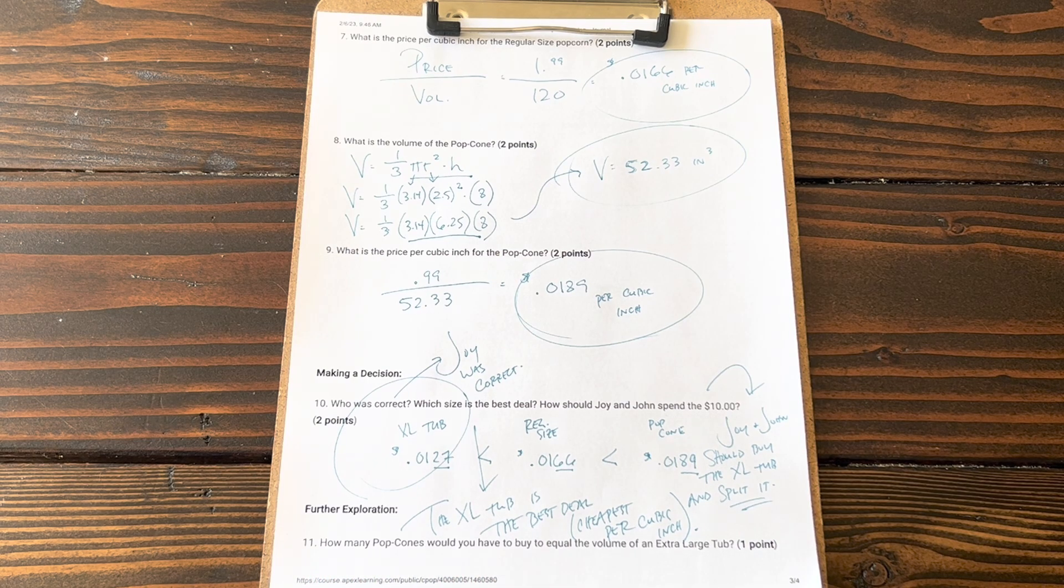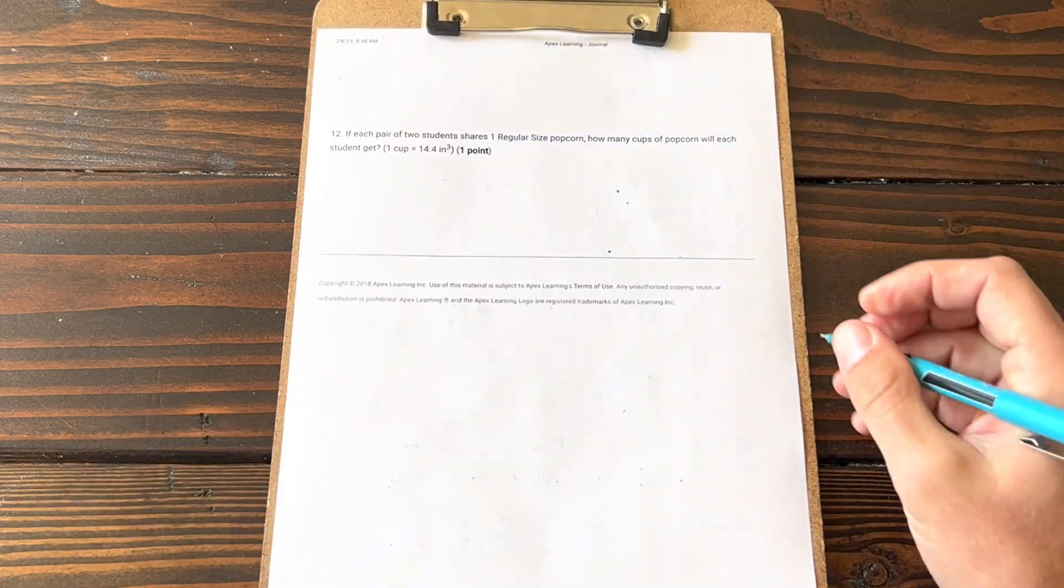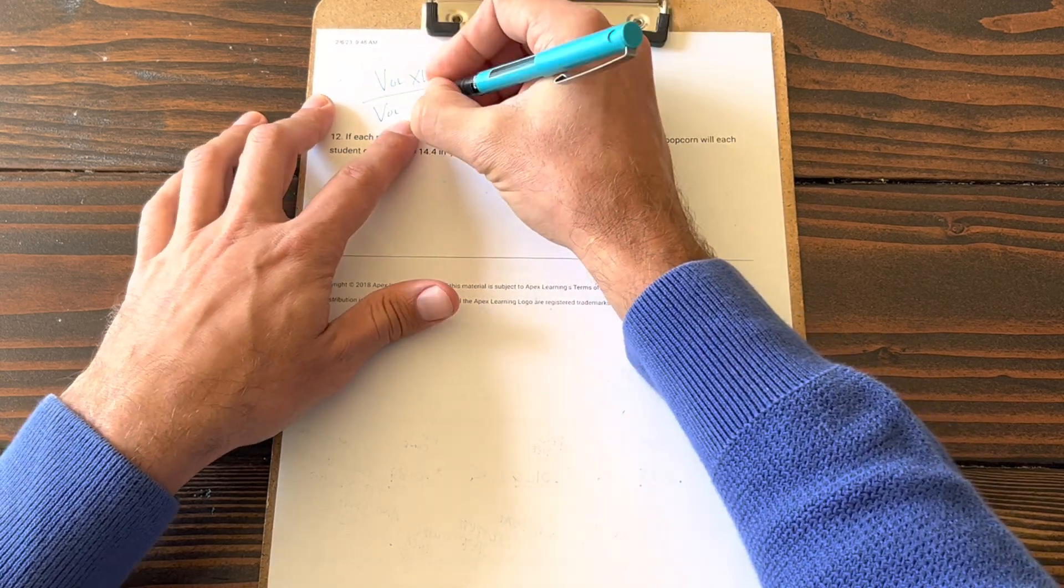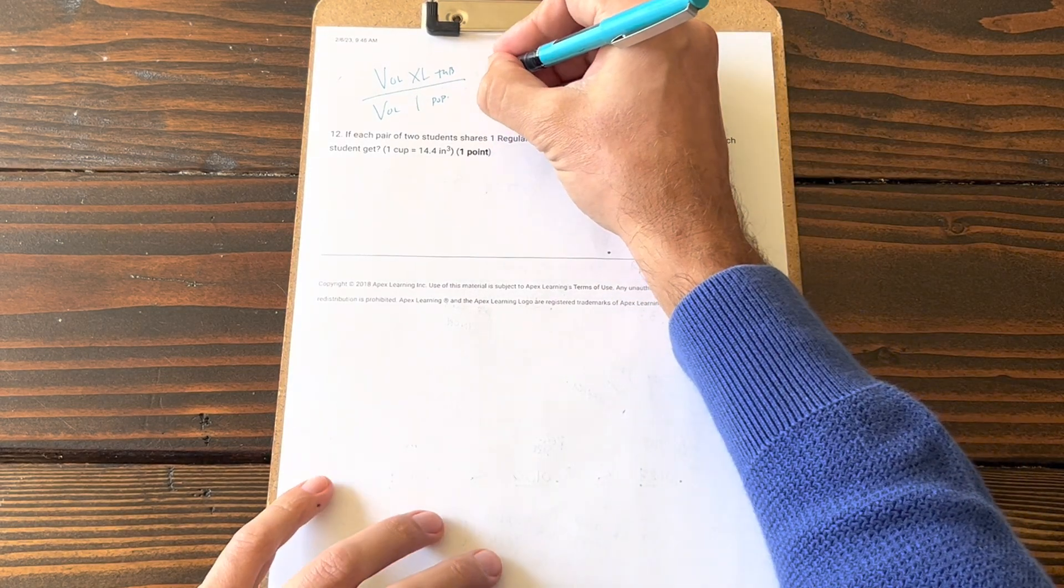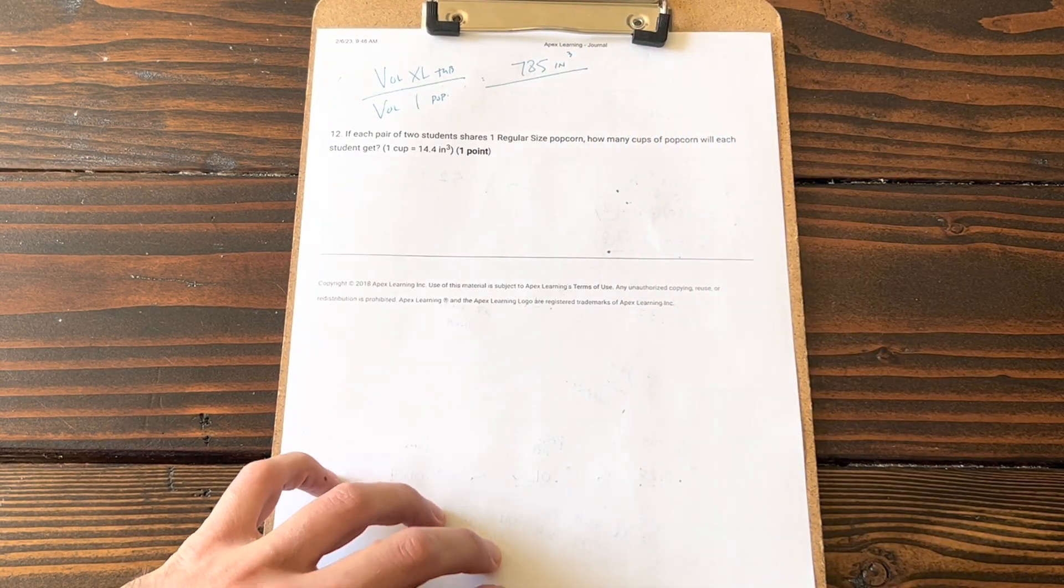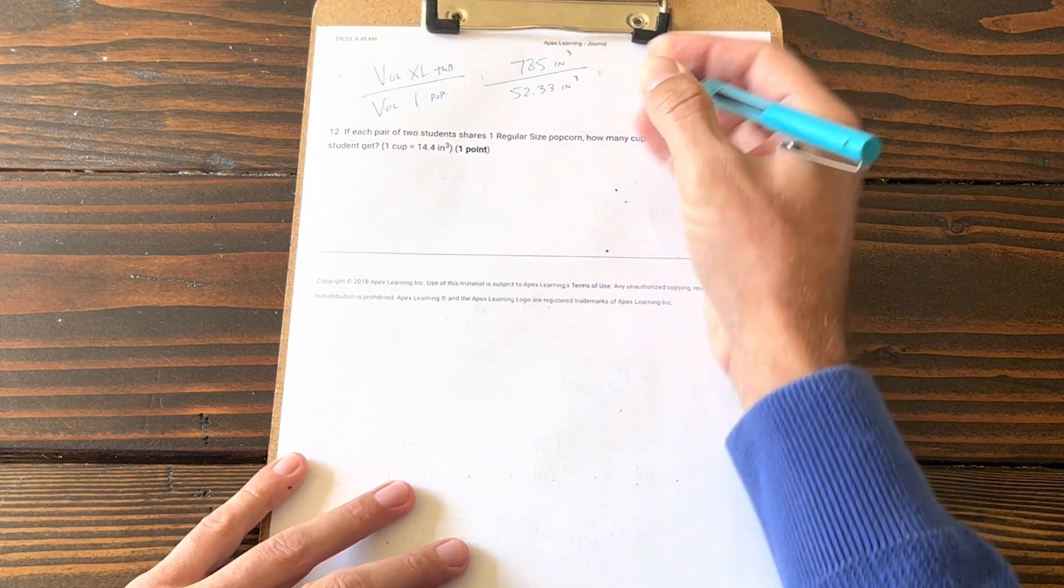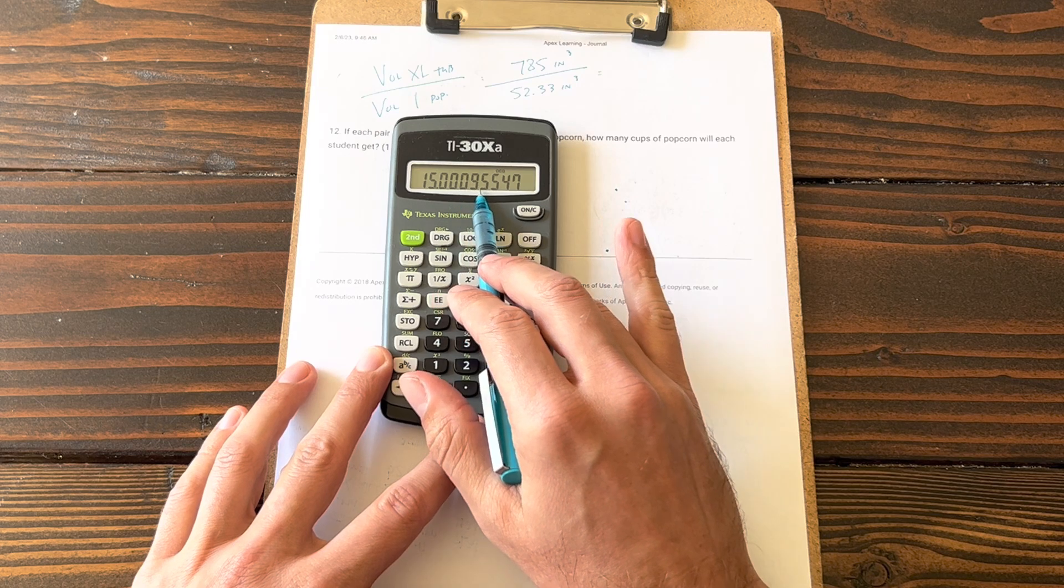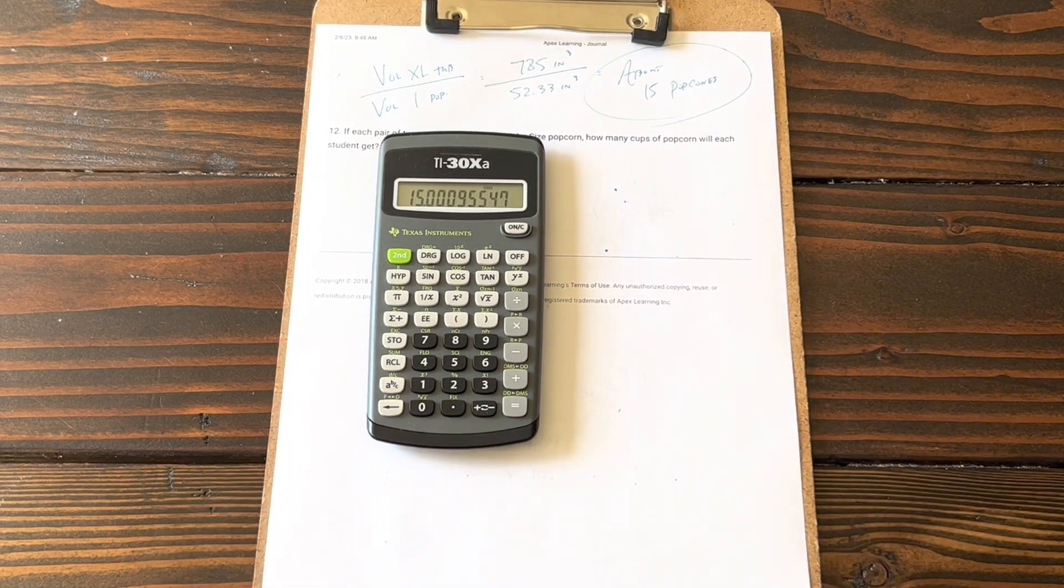Question 11: How many popcorns would you have to buy to equal the volume of an XL tub? We just need to take the volume of the greater volume—so the volume of the extra large tub—and we'll divide that by the volume of one popcorn. This will tell us how many popcorns it would take to fill or to reach the volume of an XL tub. The volume of the extra large tub was 785 inches cubed. Volume of a popcorn was 52.33. So how many would it take? 785 divide 52.33 equals 15.00095. So about 15 popcorns would equal the volume of one large tub.